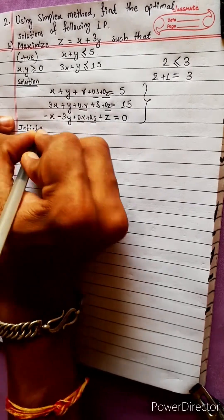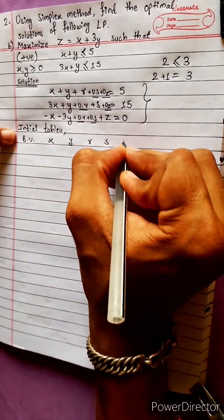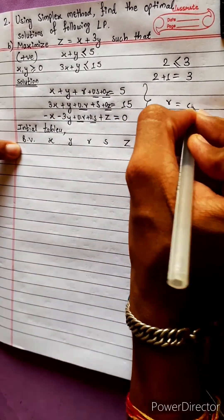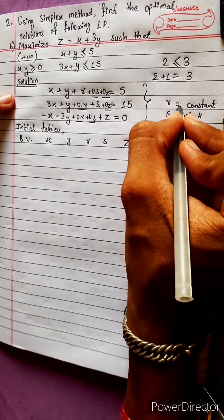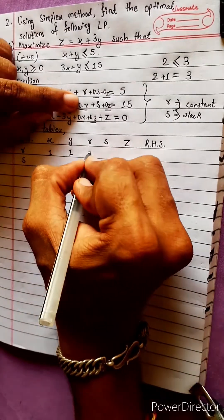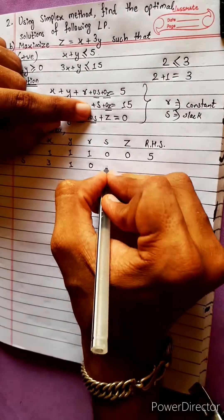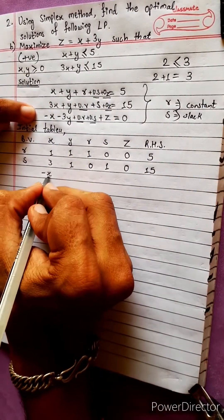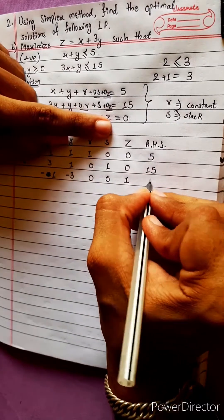We add variables x, y, r, s, z, r, hs. r and s are constants — constant slack variables. The initial tableau row is: r, s, x=1, y=1, r=1, s=0, z=0, rhs=5. Row values: 3, 1, 0, 1, 0.